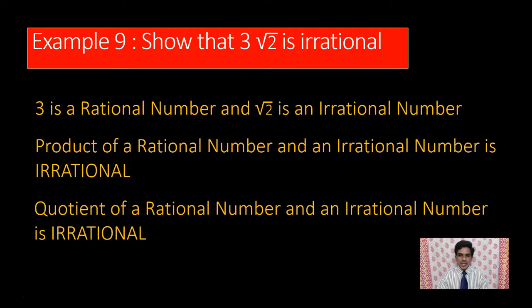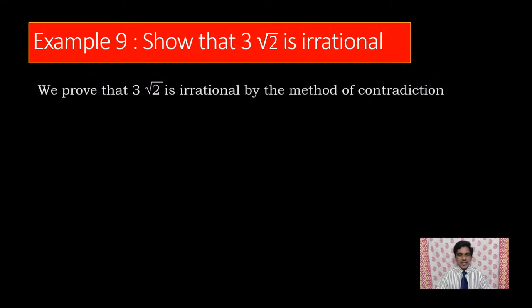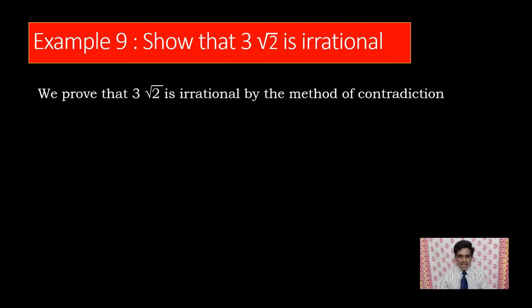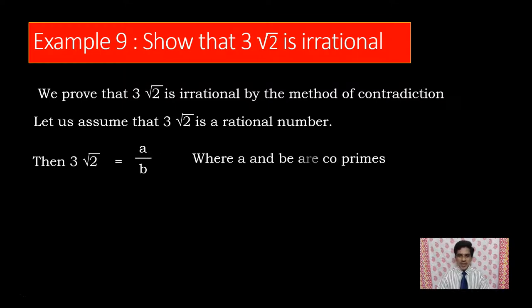The same logic can be applied to the case where you divide a rational number with an irrational, or an irrational number with a rational number. We will prove this by contradiction. We will take that 3 into square root of 2 is a rational number. According to the rational number definition, we can write that 3 into square root of 2 is a by b, where a and b are co-primes.